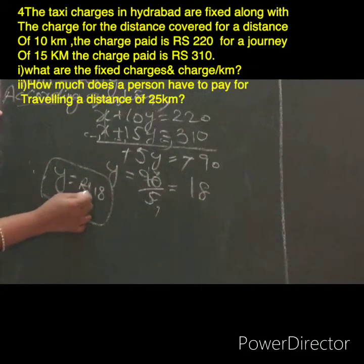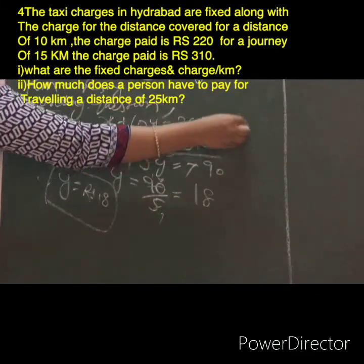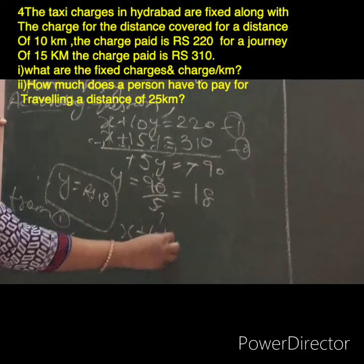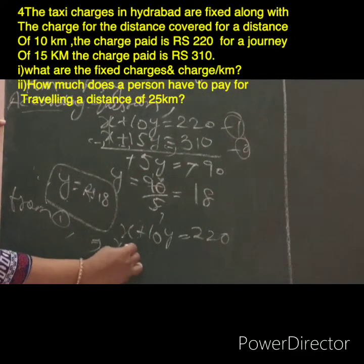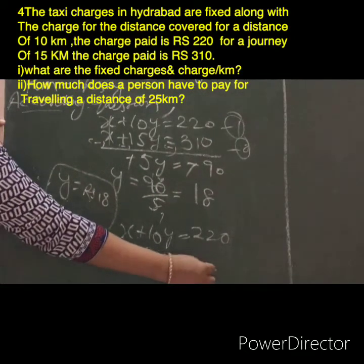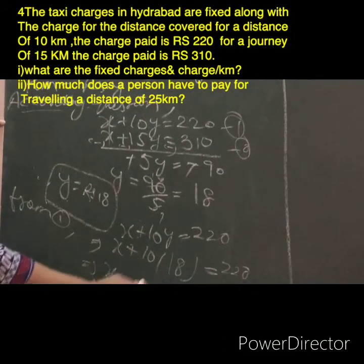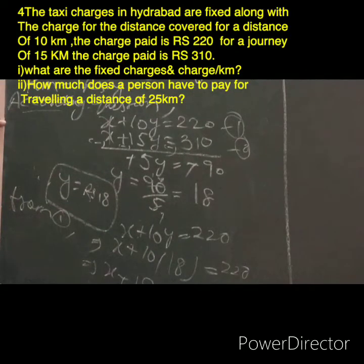What is Y here? It is the charge per kilometer — 18 rupees per kilometer. Now substitute 18 into equation 1: X plus 10 into 18 equals 220. Opening the brackets: 10 times 18 is 180. So X plus 180 equals 220, giving X minus 40 equals 0, therefore X equals 40.